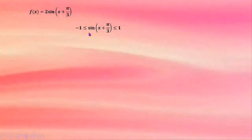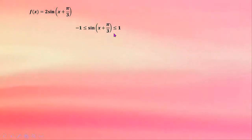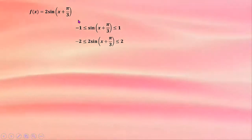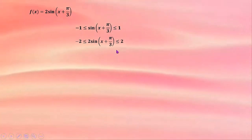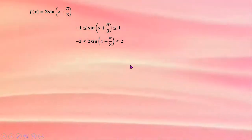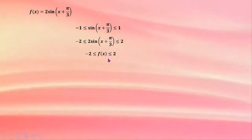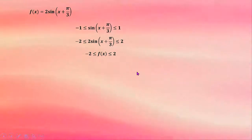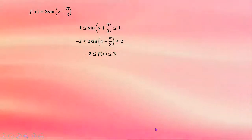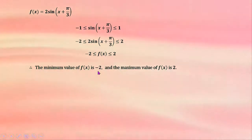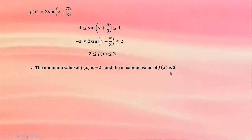The sine function takes values from −1 to 1, so 2·sine(x + π/3) takes values from −2 to 2. Therefore, the interval of f(x) is from −2 to 2. The minimum value of f(x) is −2 and the maximum value is 2.